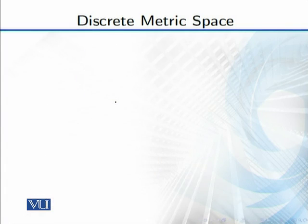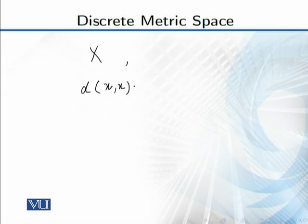The next example is the discrete metric space. For a metric space you need a set X. In discrete metric space, the set X can be anything — it could be real numbers, ℝ³, ℝⁿ, functions, sequences — anything. Then we need a distance function D. The distance function here is generalized: if we take two elements from X and those two elements are the same, then the distance is zero. On the other hand, if we take two different elements, the distance is one.